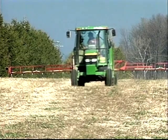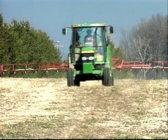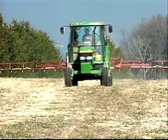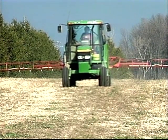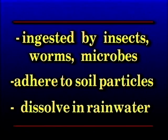Each time you apply a pesticide on your farm, a number of things may happen to that pesticide. The pesticide may be taken up by plants, evaporated into the atmosphere, carried off as drift, or ingested by insects, worms, and microorganisms.